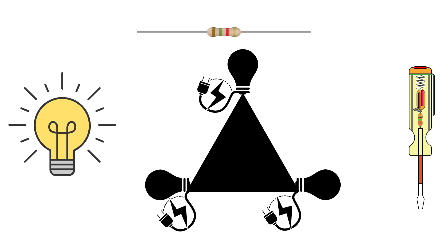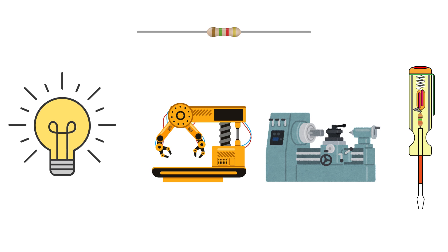In the delta connection, the components are connected end to end creating a closed loop. This setup can handle more power and is often used in high power applications like big motors and factories.